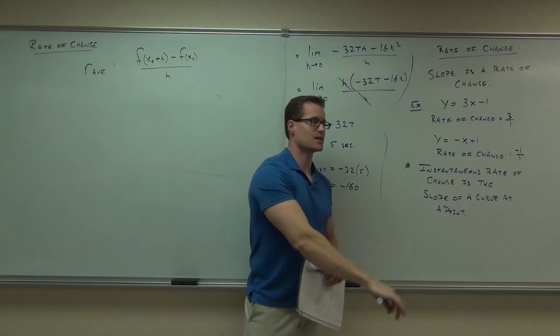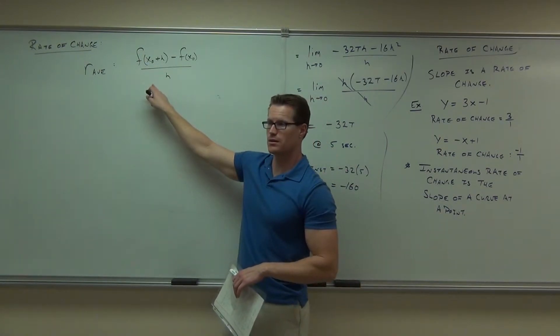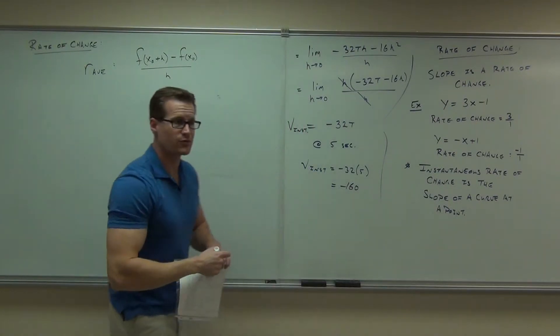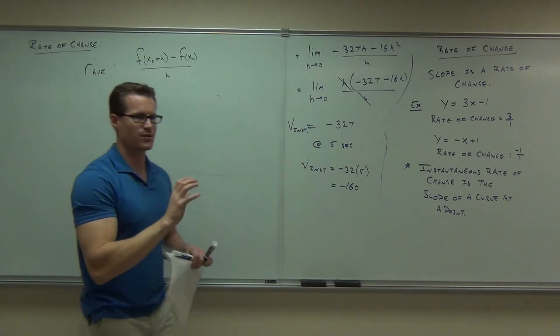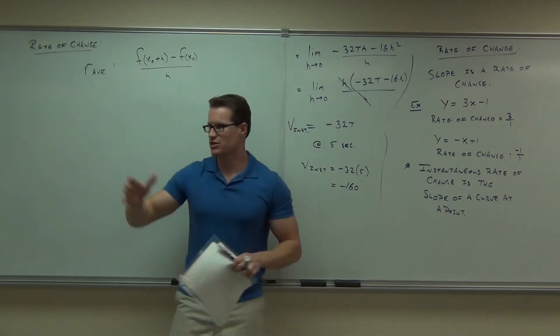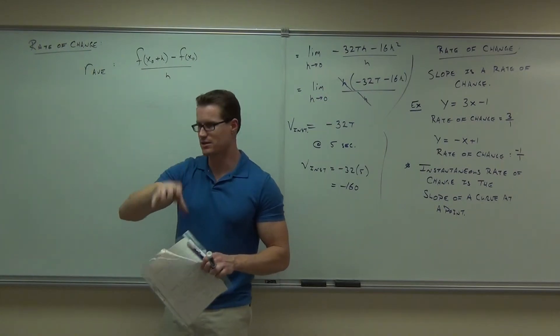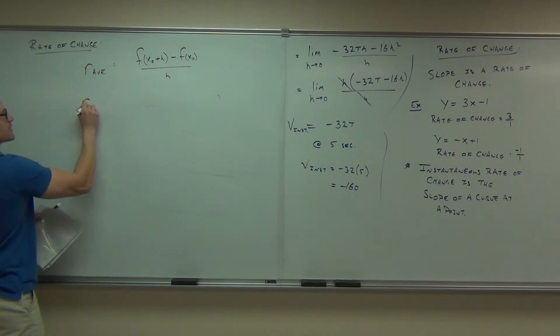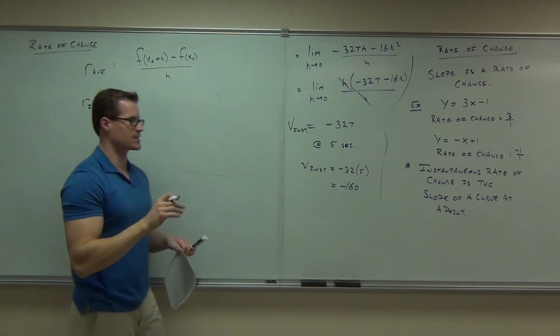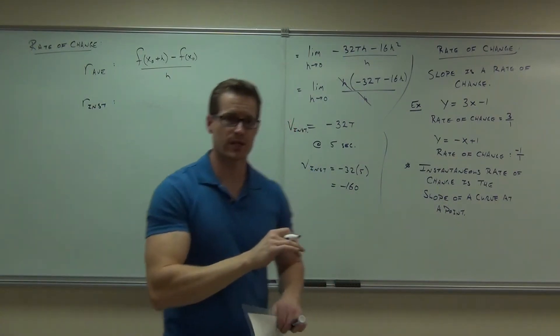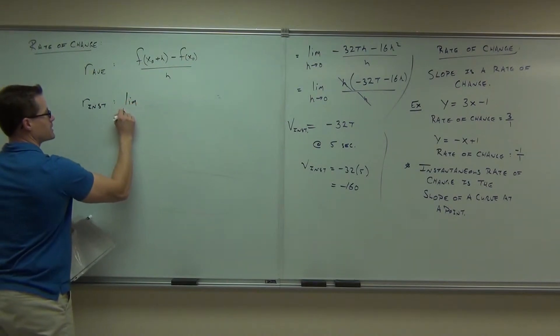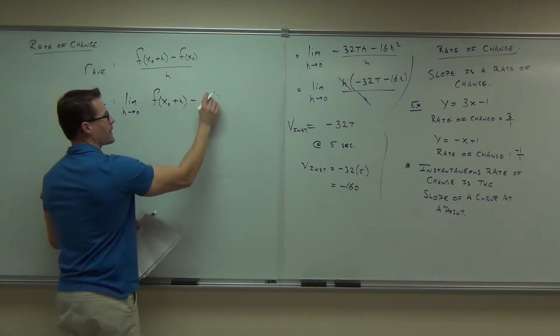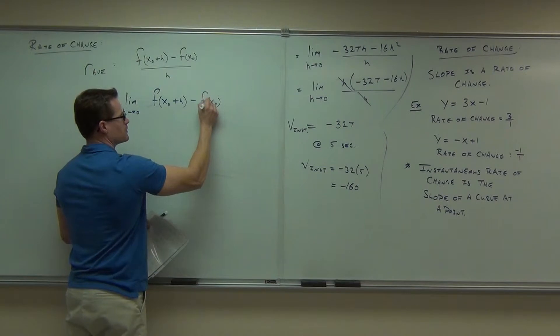How I find the instantaneous rate of change is do what to this thing? Put a limit on the front. As h approaches what? Zero. Yeah. So, that's how we're going from an average rate of change to an instantaneous. Are you starting to see that every one of these things is almost identical? Average is just a slope, okay? Instantaneous is the limit of that slope. It's saying, find it at a point. That's all we're doing. So, this is the average rate of change. The instantaneous rate of change is identical to an instantaneous velocity. It's identical to the slope of a curve at a point. It is a limit as h approaches zero of the slope. It says, what's the slope as you approach one point? That's it.